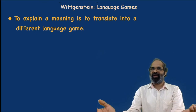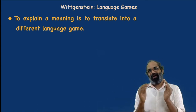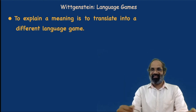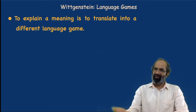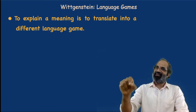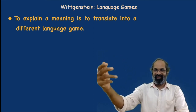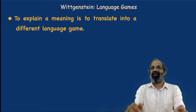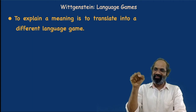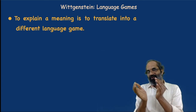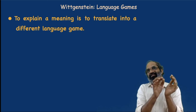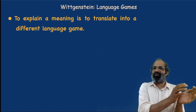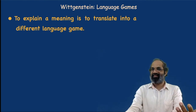To explain a meaning is to translate it into a different language game. If I say 'water boils at 100 degrees' and you do not understand, and I then explain that heating water causes it to evaporate into vapour at 100 degrees — that explanation amounts to another language game, because the context and the words used are different. Since the context changes, I am changing the language game. Each and every explanation is thus a translation into a different language game — that is what Wittgenstein says.